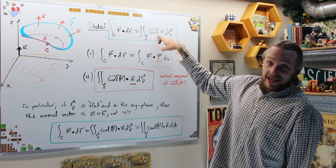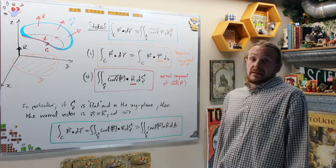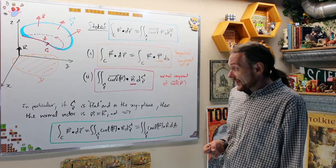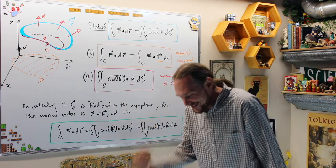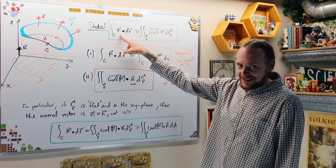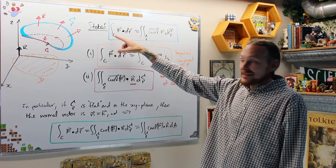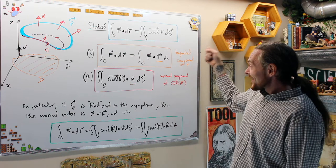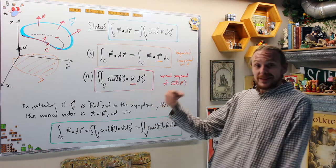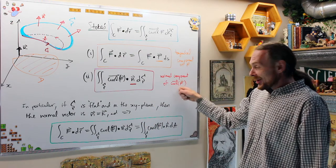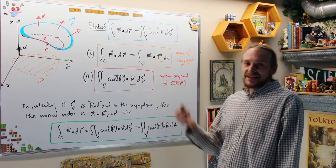The right-hand side, viewed separately, says the surface integral is curl dot n dS — the definition of a surface integral over vector fields — and that's the normal component of the curl of F. So Stokes Theorem says the line integral of F over the curve C, which is the boundary of S, equals the line integral of the tangential component of F, which equals the surface integral over S of the normal component of the curl of F. It's saying something deep, and that's why it gets a name.